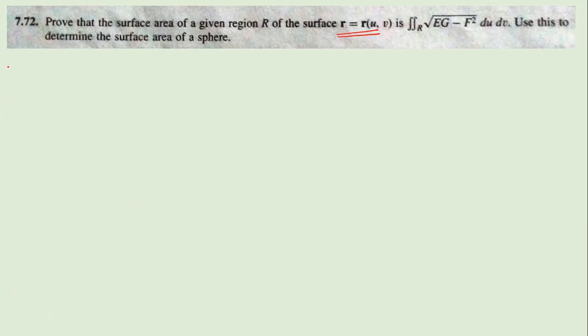For that you need to know what E, G, and F are. Write down that R vector equals a function of u and v, two variables. So you can write dR = (∂R/∂u)du + (∂R/∂v)dv.